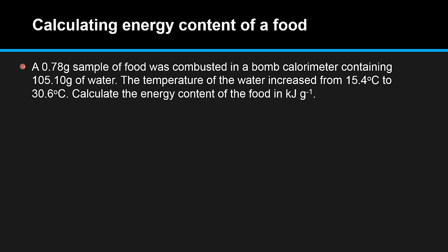Next we look at how to calculate the energy content of a food. Here's an example. A 0.78 gram sample of food was combusted in a bomb calorimeter containing 105.10 grams of water. The temperature of the water increased from 15.4°C to 30.6°C. Calculate the energy content of the food in kilojoules per gram.